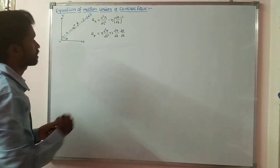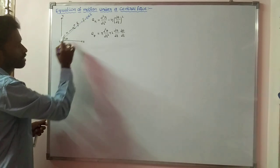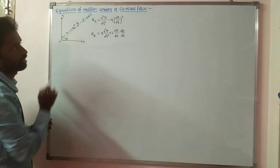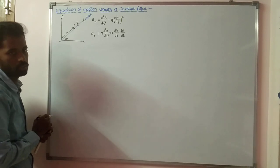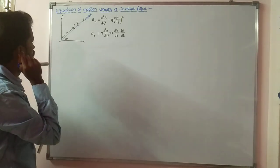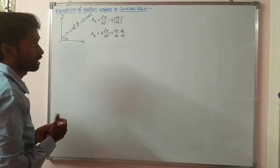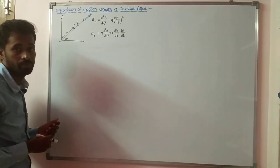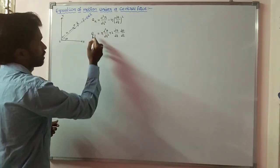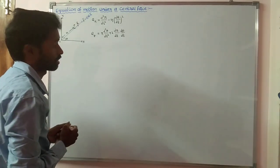This central force can be explained by using the polar coordinate system R and theta. That's why in the last class we found out radial velocity, transverse velocity, radial acceleration, and transverse acceleration.